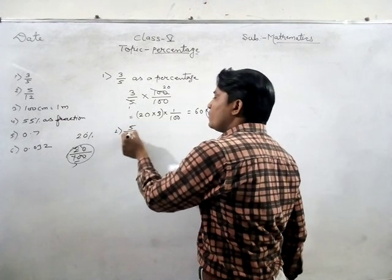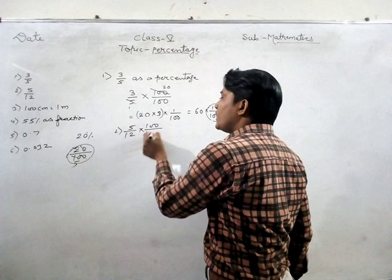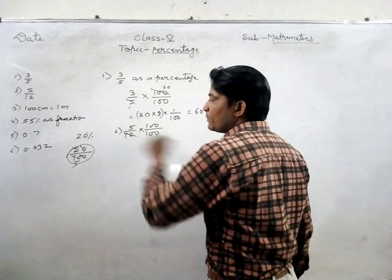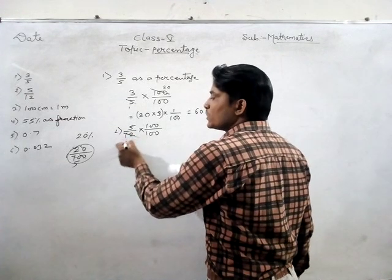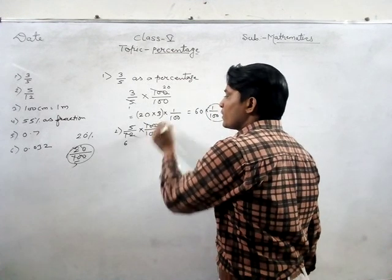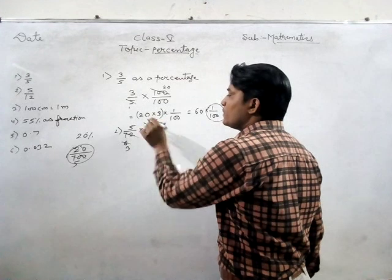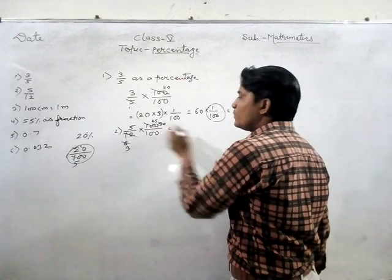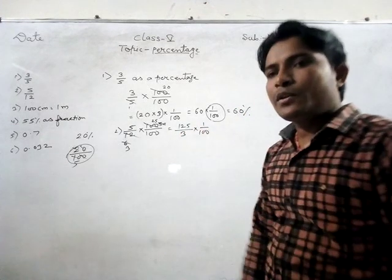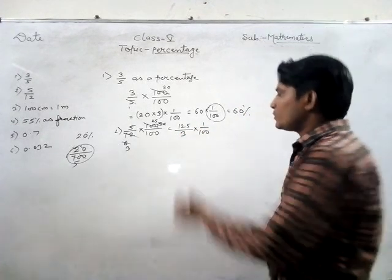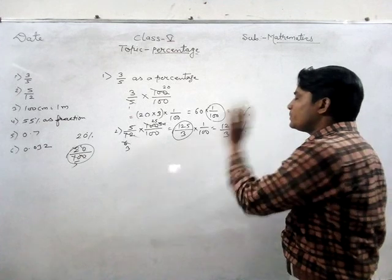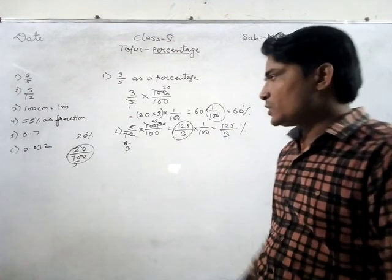Our second problem is 5 upon 12. Similarly, multiply by 100 and divide by 100. If 100 is not completely cancelled out, we get 25 into 5, which is 125 divided by 3 into 1 upon 100. Since 1 upon 100 is the symbol of percent, the answer is 125 divided by 3 percent.